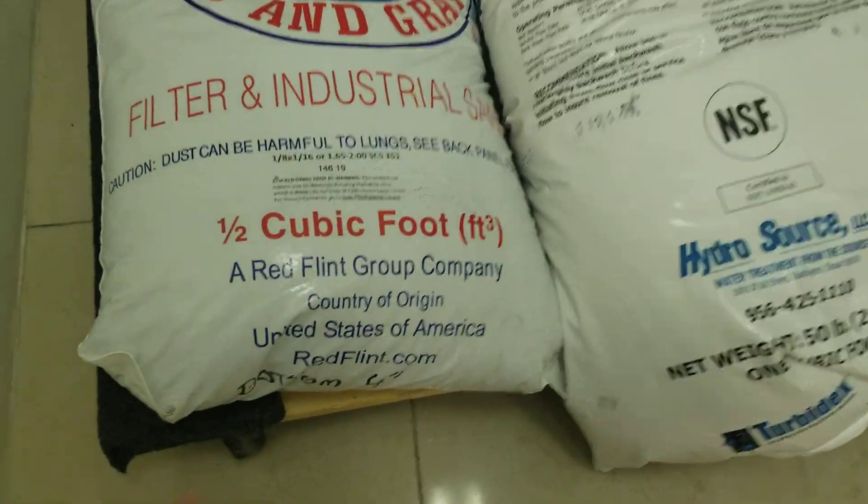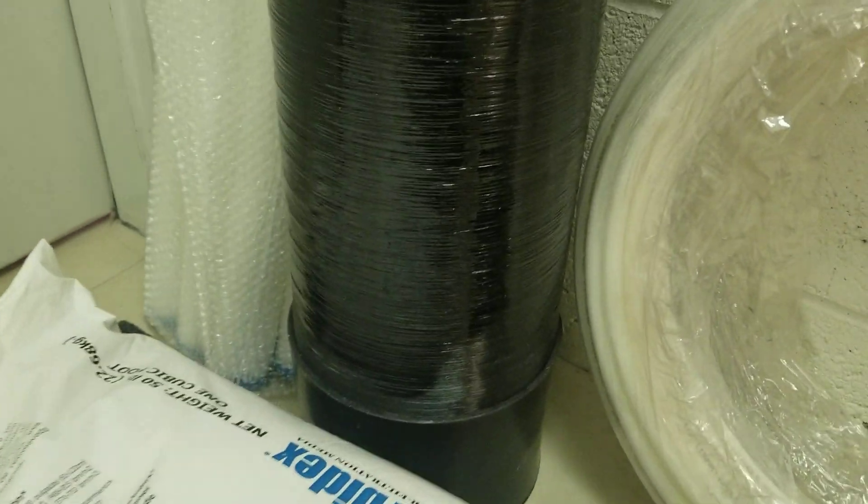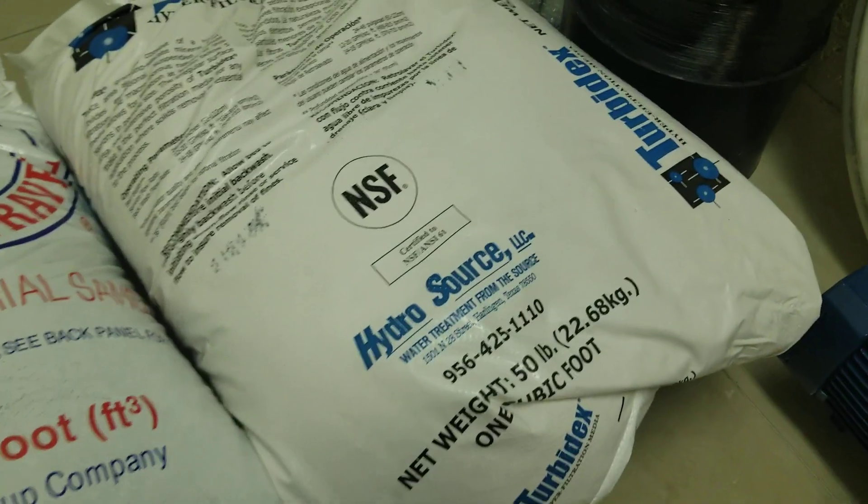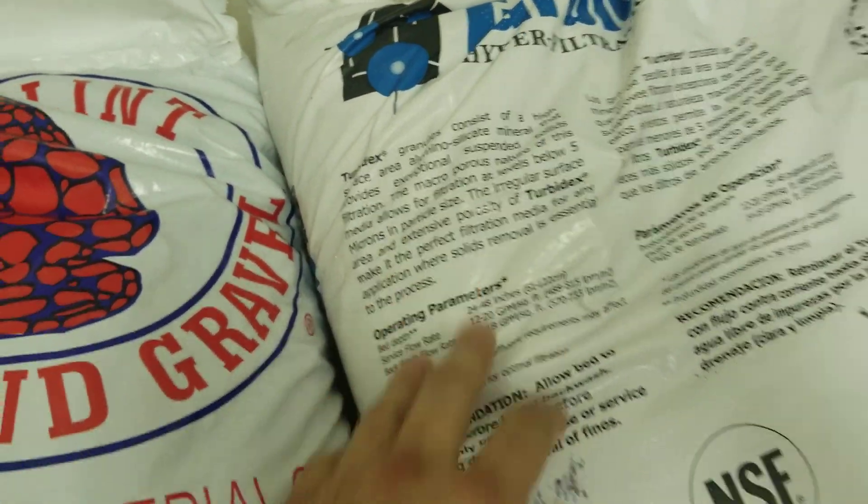One is a coarse sand. When you receive this, you fill the filter to about 12 inches with the coarse sand and the rest of it with the fine sand. The fine sand, as you can see here, it says somewhere over here, I believe it says 5 microns.